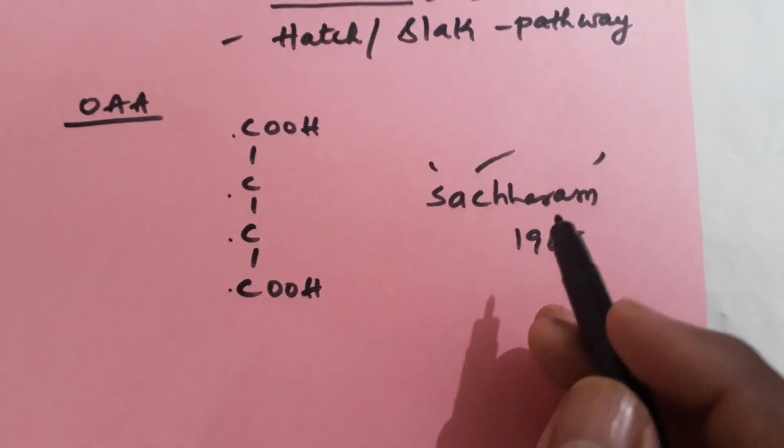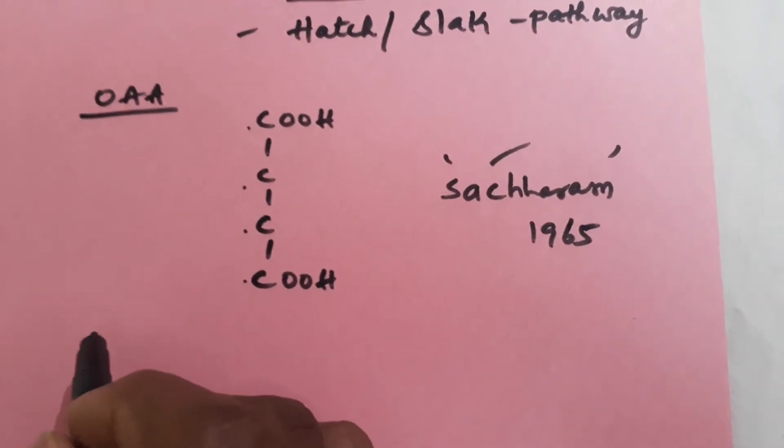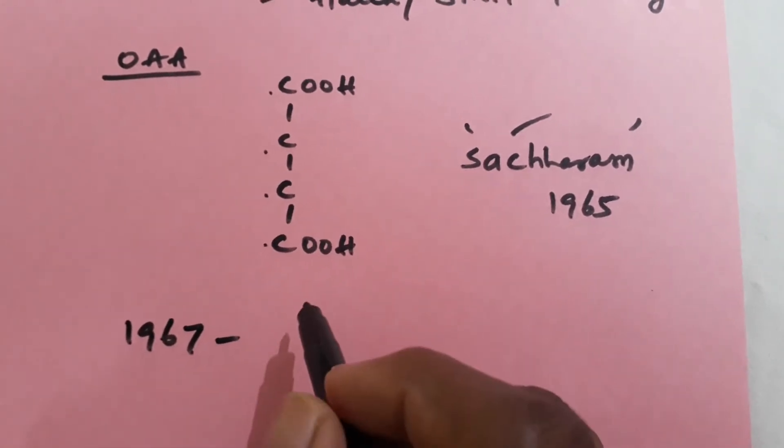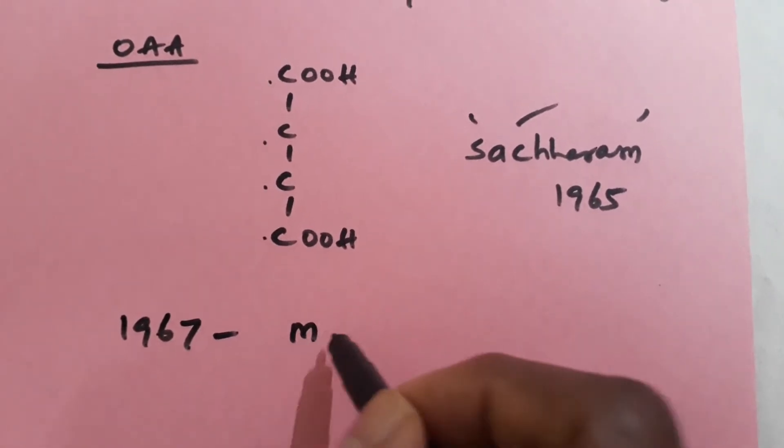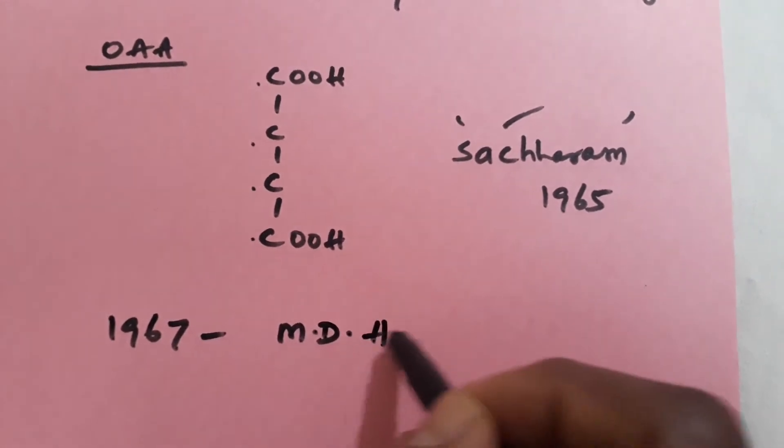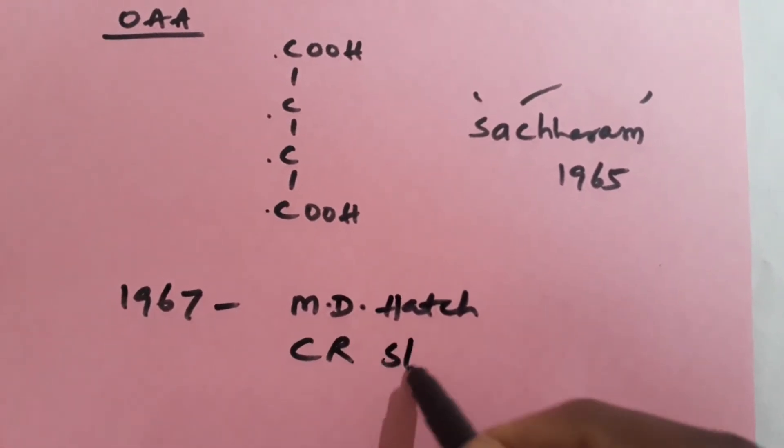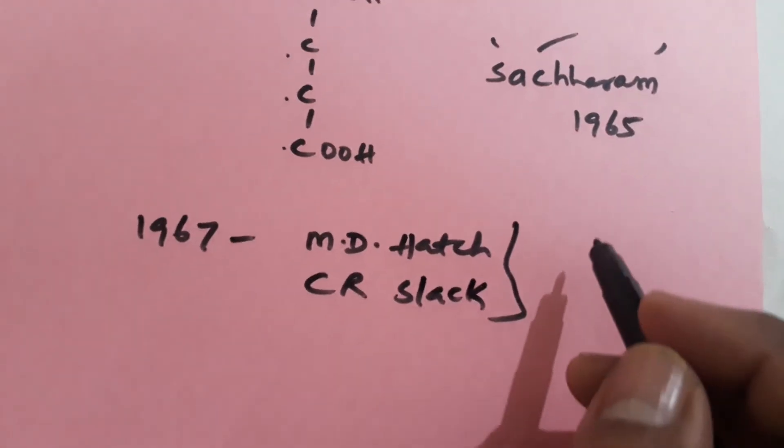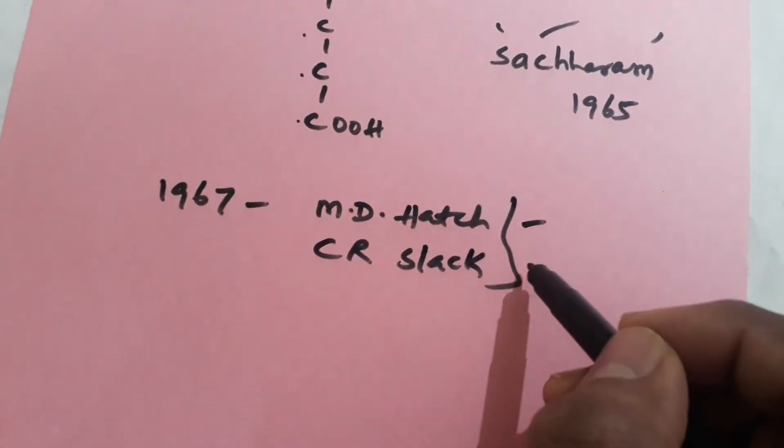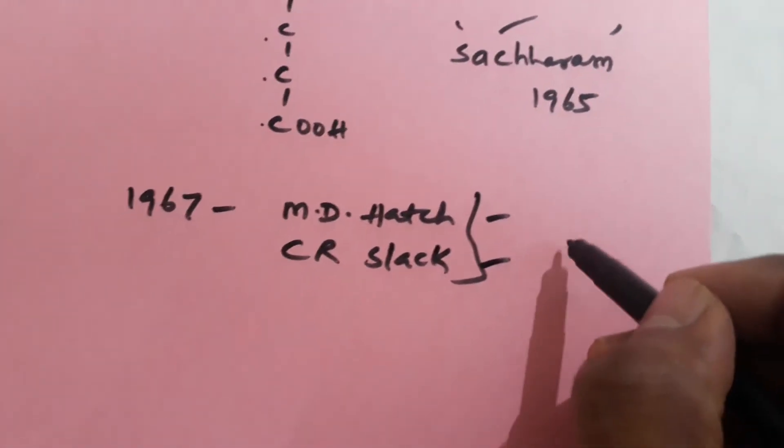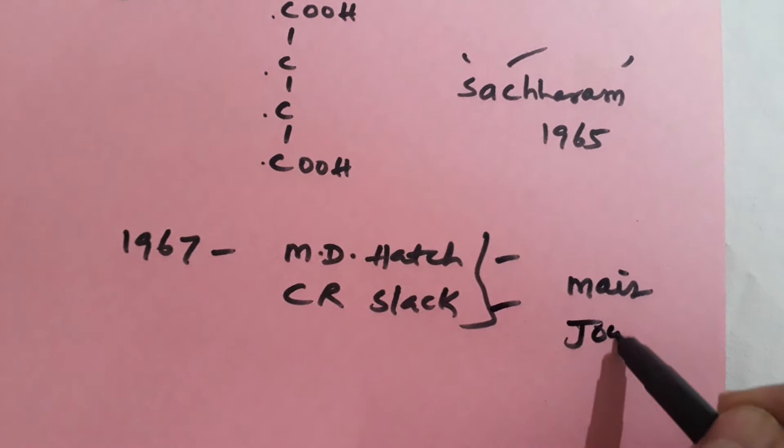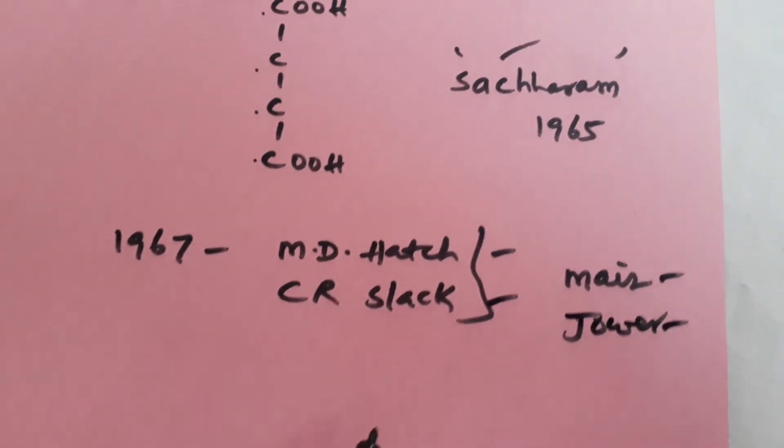Later, the same cycle was again discovered in 1967 by Australian scientists MD Hatch and CR Slack. Therefore, honorarily, the pathway is called Hatch-Slack pathway in maize plant and jowar plant.